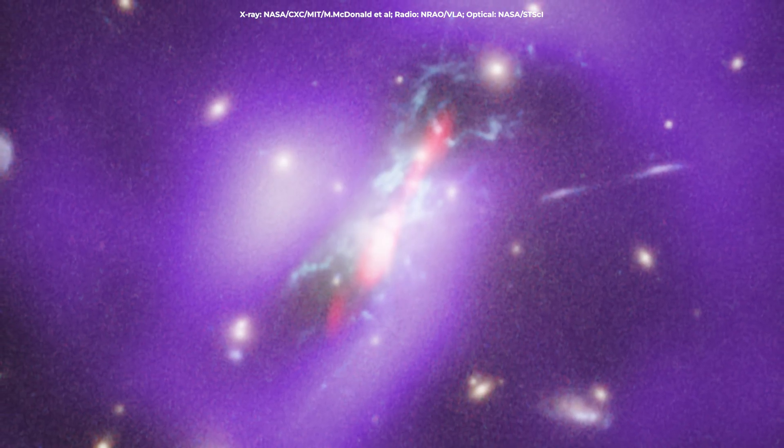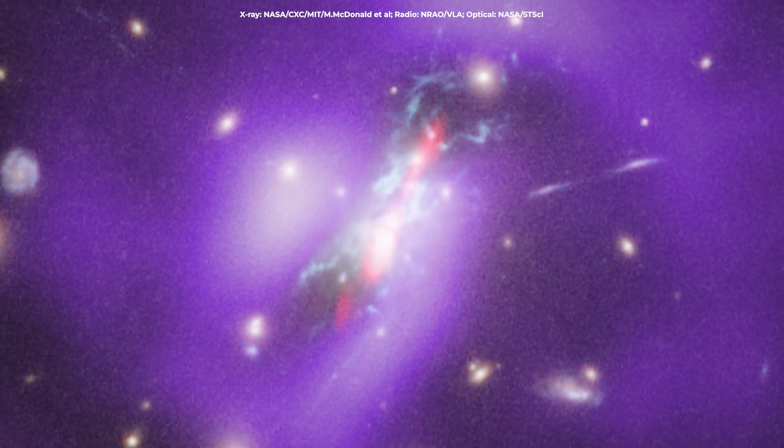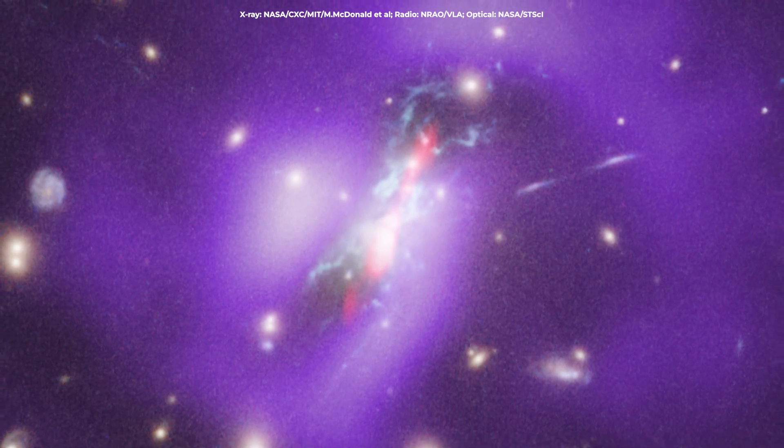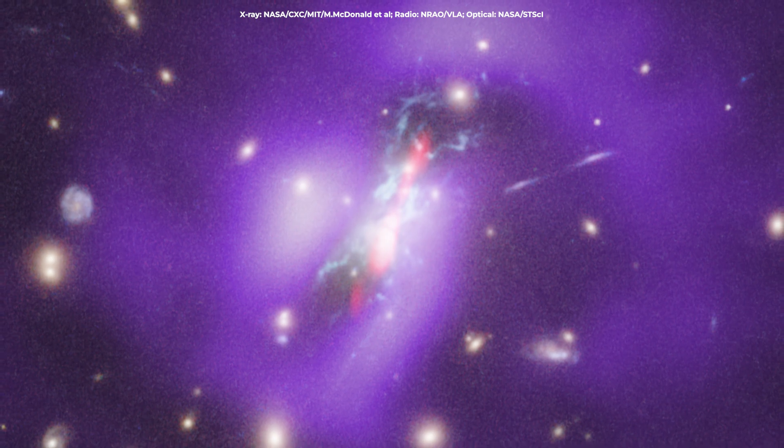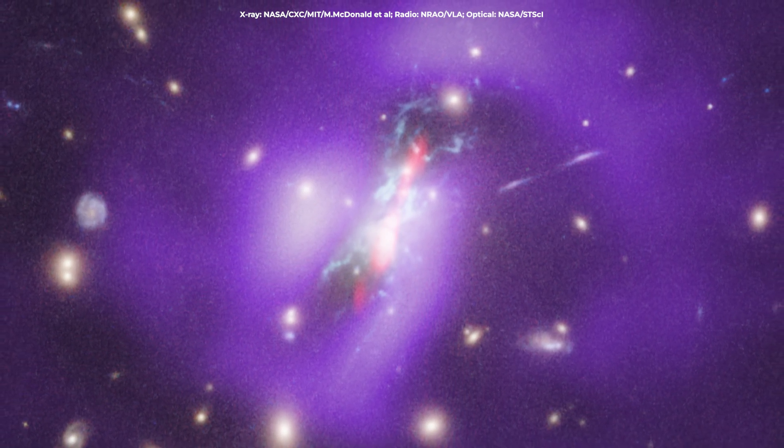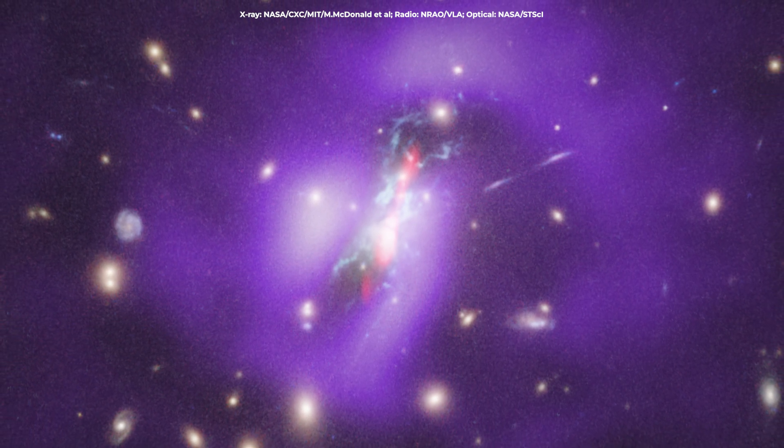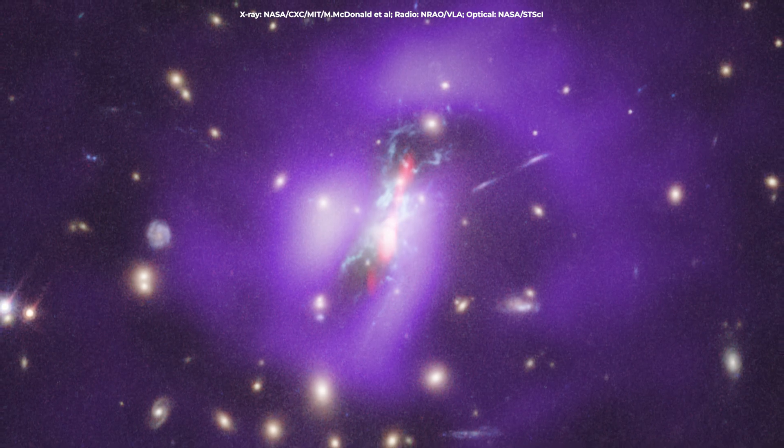This is a composite image that shows data from different telescopes. X-rays from Chandra depict hot gas in purple, and radio emissions from the VLA feature jets in red. Optical light data from Hubble show galaxies in yellow, and filaments of cooler gas where stars are forming in light blue. These combined observations across different wavelengths and methods paint a comprehensive picture of the Phoenix Cluster.